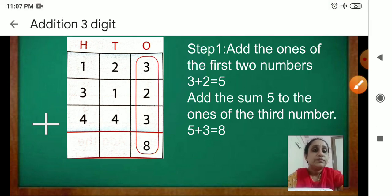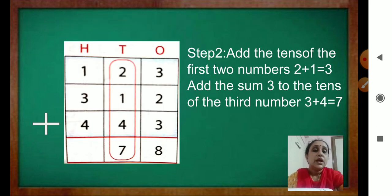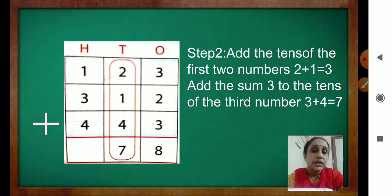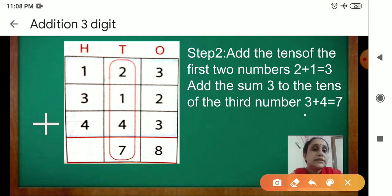Okay? 3 plus 2 is 5, and 5 plus 3 is 8. Now we will see the next step — step 2: add the 10s of the first 2 numbers. That is 2 plus 1. How much are you getting? 3. And then 3 plus 4, you will get 7. Add the sum 3 to the 10s of the third number. That is 3 plus 4 is 7.